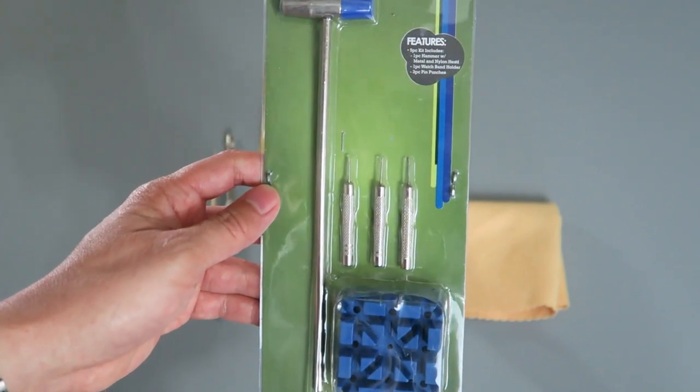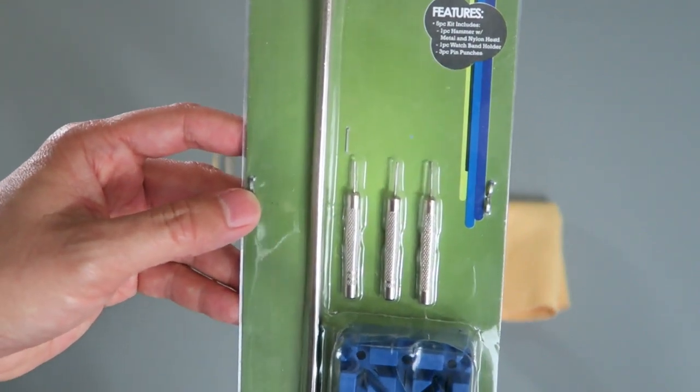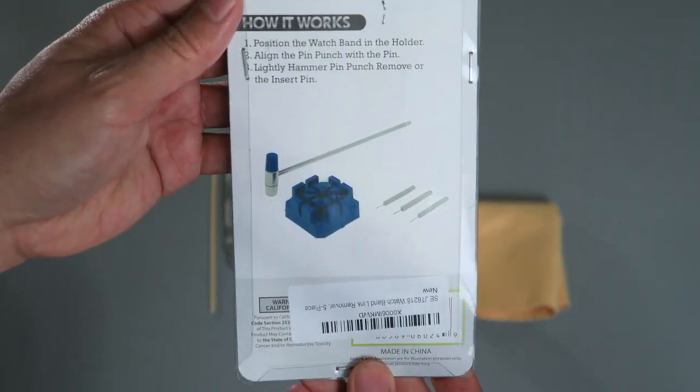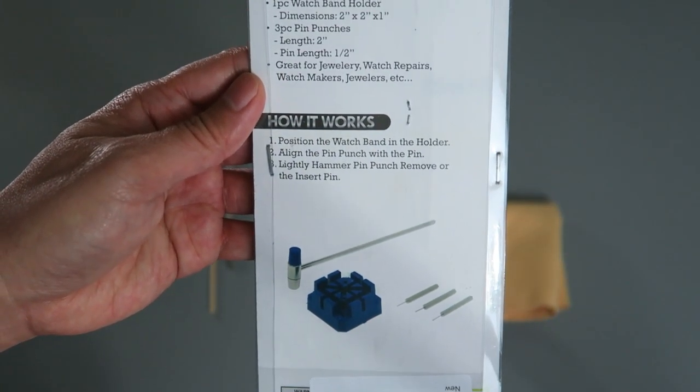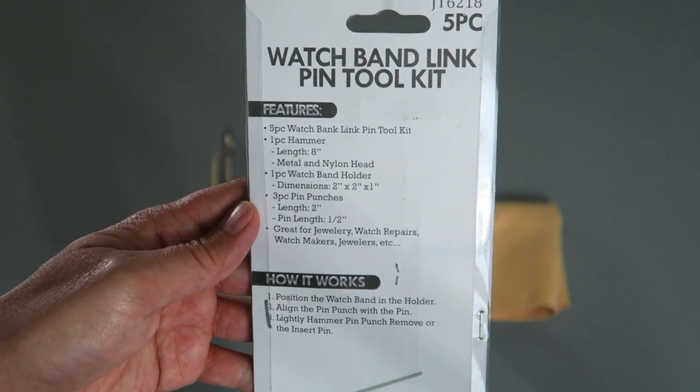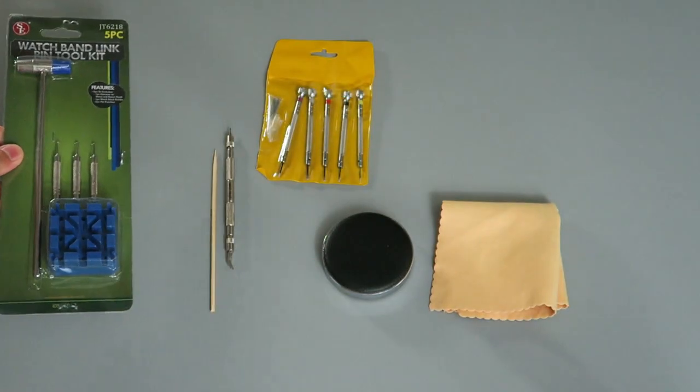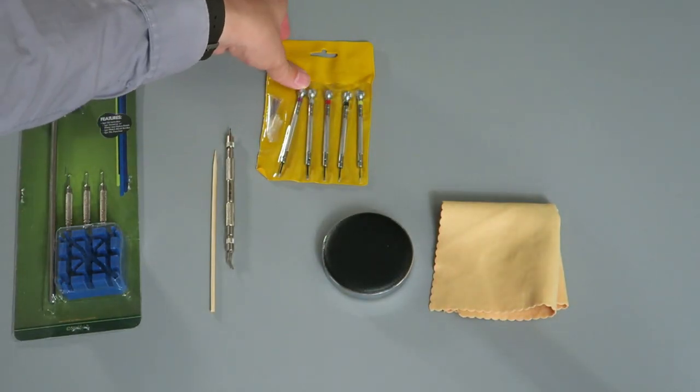This enables you to place the bracelet in the little holder there on the bottom and then you just use the pins and tap out the pins of the watch bracelet. So it's something that is used for sizing watch bracelets primarily. Definitely good to have around.